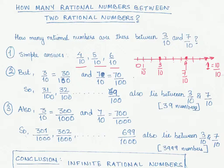But wait a minute, let's think a little bit further. Can I write 3 by 10 as 30 by 100, multiplying both the numerator and denominator by 10? And we can also write 7 by 10 as 70 by 100.